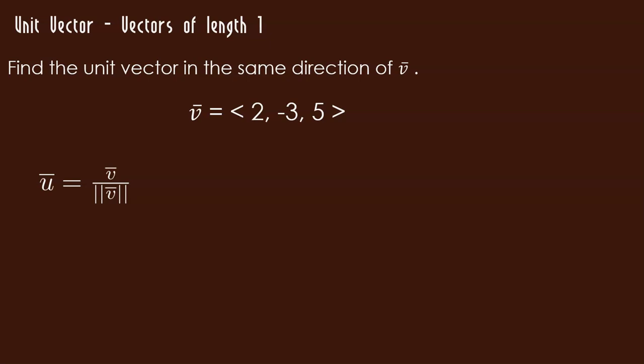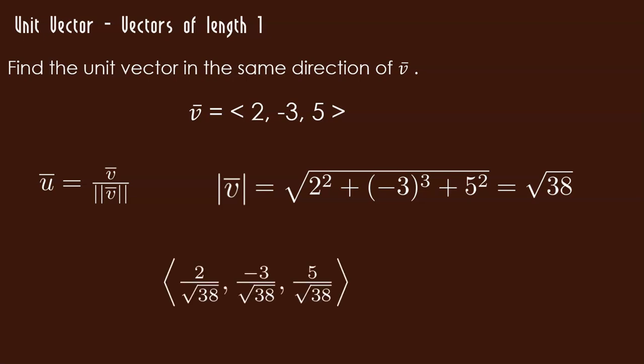We find the length of v and divide v by its length. So I called u the unit vector because I take v and I divide it by its magnitude. Well, what is the magnitude of v? Well, you've got 2 squared plus 3 squared plus 5 squared square rooted. That gives me the square root of 38. So dividing each of those terms by the square root of 38, I get this beautiful vector. 2 over the square root of 38, negative 3 over the square root of 38, and 5 over the square root of 38.